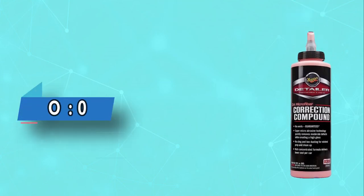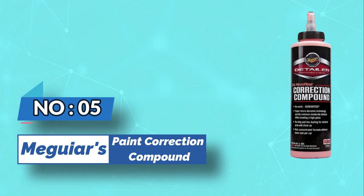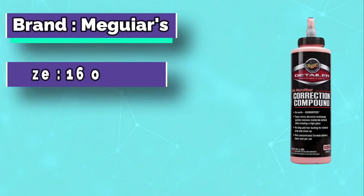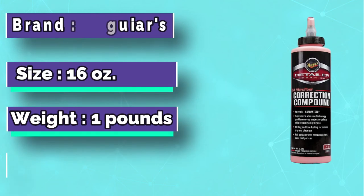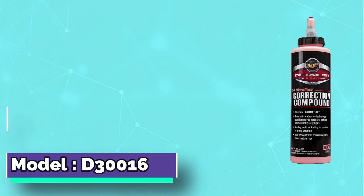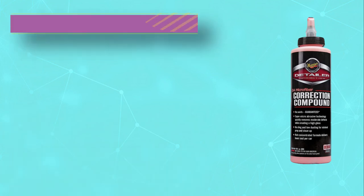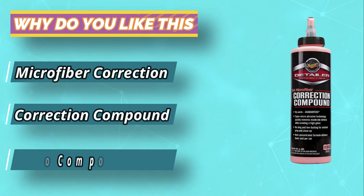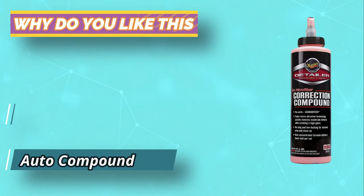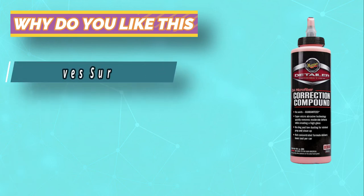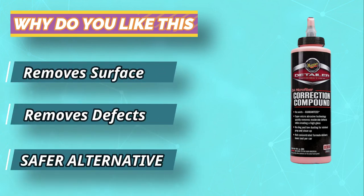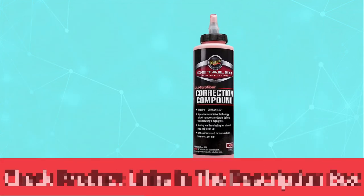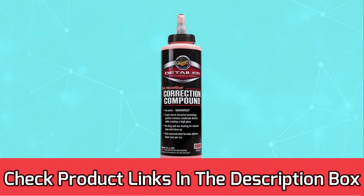Number 5: Meguiar's Paint Correction Compound. Meguiar's DA Microfiber Correction Compound features super micro-abrasive technology to quickly remove scratches, acid rain, swirls and holograms, and other light to moderate defects on factory paint. Produces a high gloss with no swirls, while the no-sling, low-dusting formula means minimal prep and easy cleanup. Our concentrated formula gives you lower cost per car.